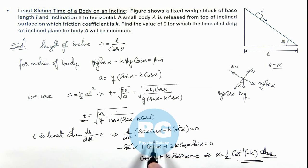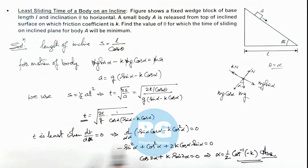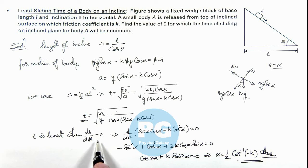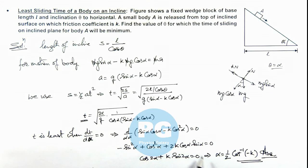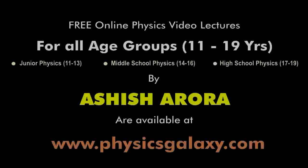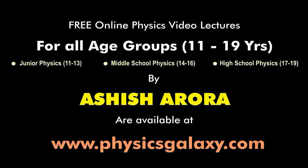Note that here I am not verifying whether it is a minimum or maximum — I am only optimizing by differentiating and setting equal to zero. You can further differentiate this relation, substitute the value of alpha, and verify by a second derivative check that the time is indeed minimum at that value.